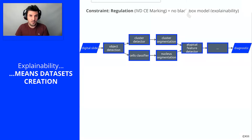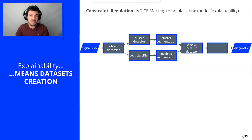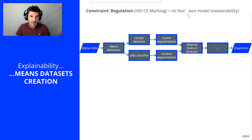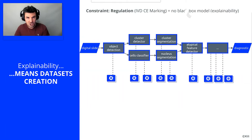For example: detect the cellular objects, find the urothelial cells, segment the nuclei and the cytoplasm, compute atypical criteria, etc. So we will have one or more machine learning models for each step of the analysis.